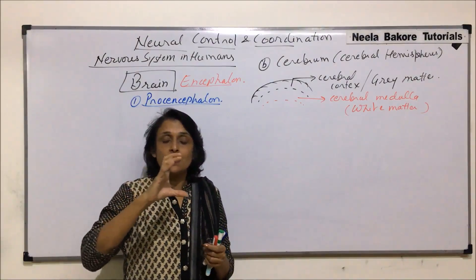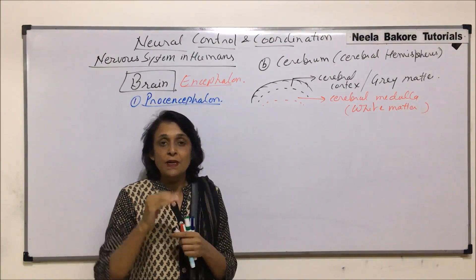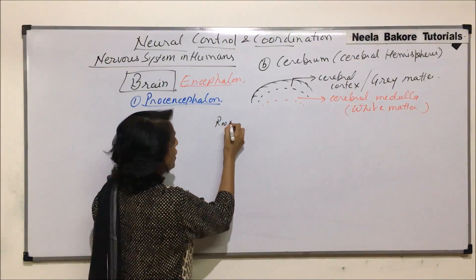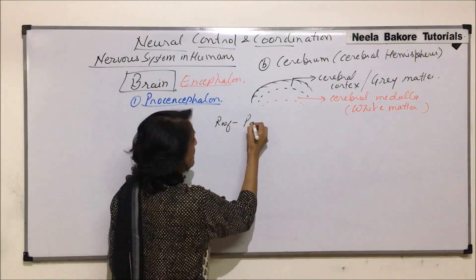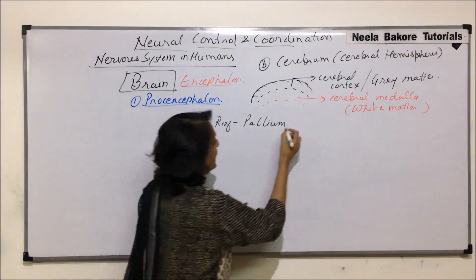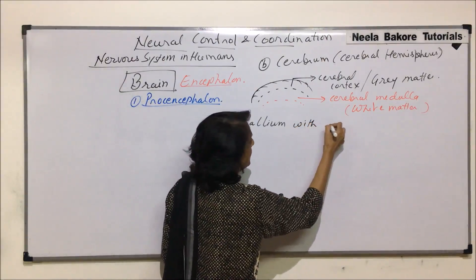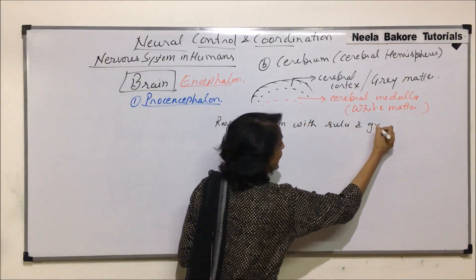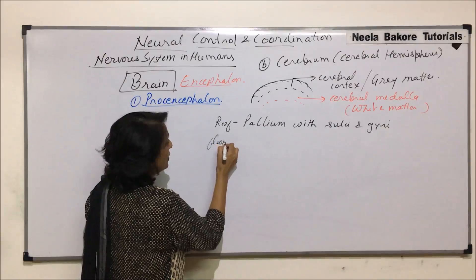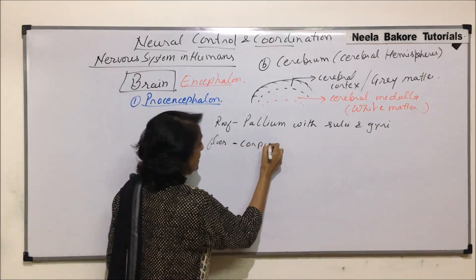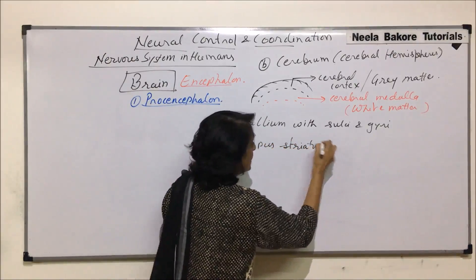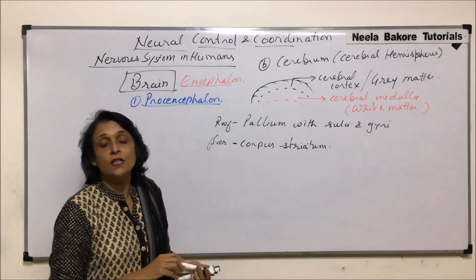Now, talking about the complete cerebrum, it has a roof and a floor. The roof of the cerebrum is known as the palium, which is the part that has sulci and gyri — that is the ridges and furrows. The floor is known as the corpus striatum, which is the floor of the cerebrum.